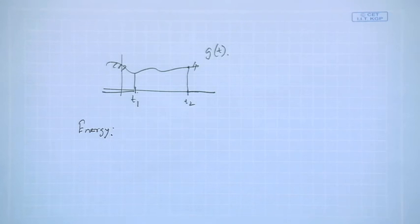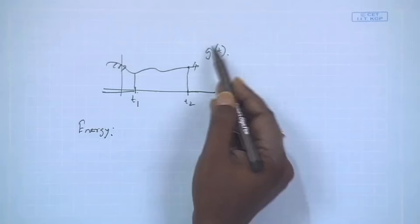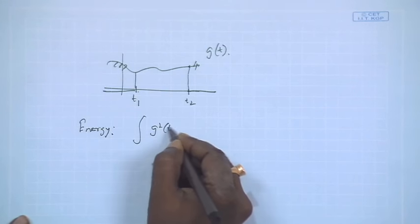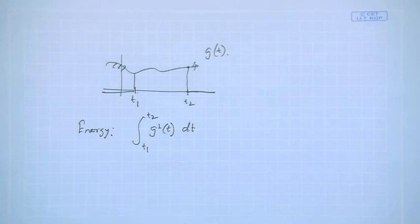How do we define energy? If you take g(t) as voltage and pass it through a unit resistance, energy is the integral of g²(t) from t1 to t2. That is the energy of signal g. As long as the signal is time-bounded we can integrate it and get a finite value, which characterizes a specific property of the signal. Different signals may have different energies, though multiple signals can share the same energy value.